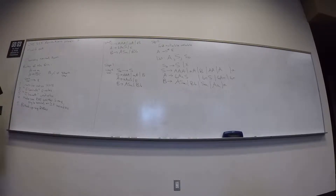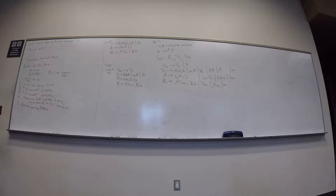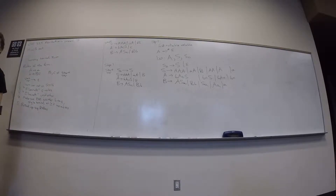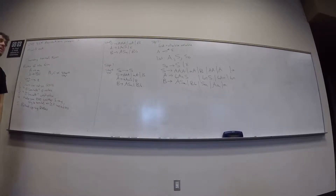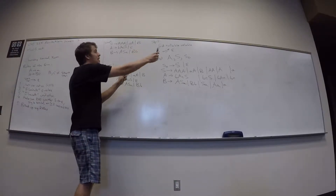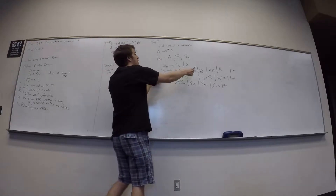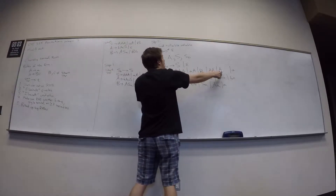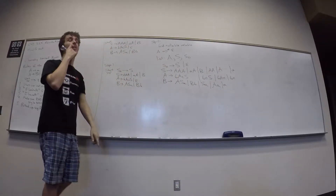Next step: eliminate unit rules. How many unit rules do I have? Three: S0 to S, S to B, and S to A.